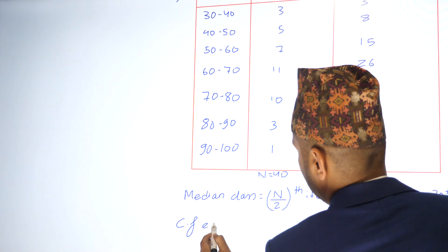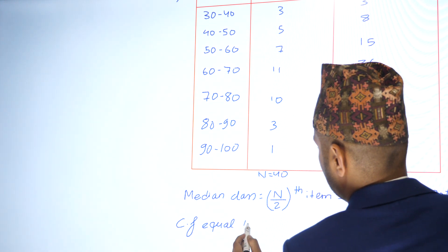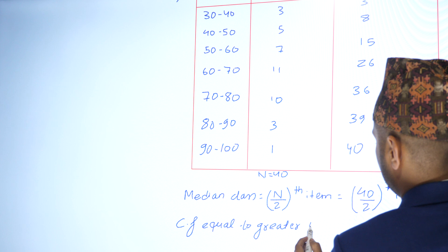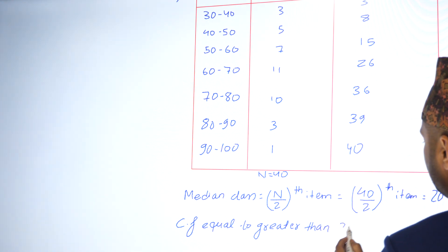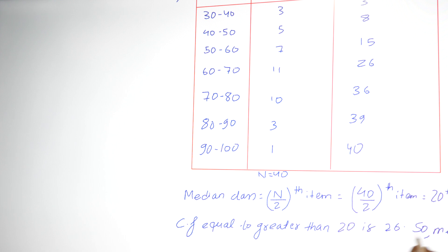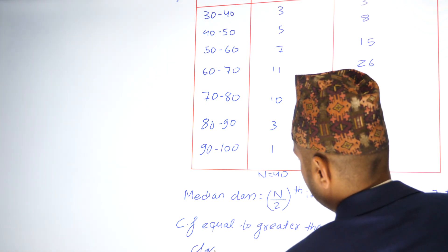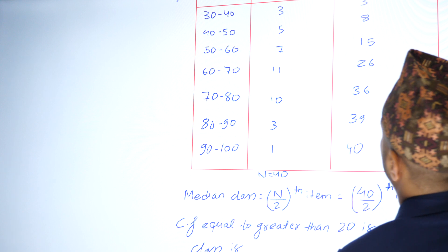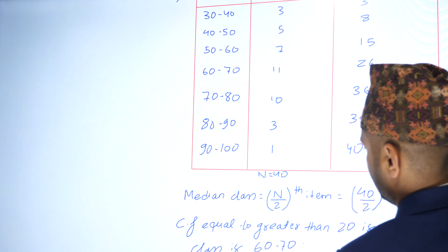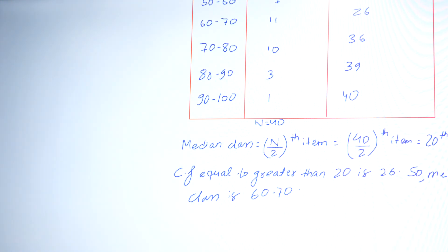The cumulative frequency equal to or greater than 20 is 26. So the median class is 60 to 70. The 20th item falls in this class.